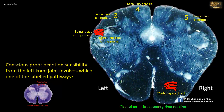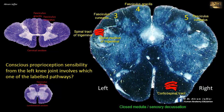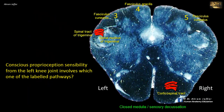Fibers are continuously added to the system from the lateral side as the spinal cord is ascended, so that at mid-thoracic level and above, fasciculus cuneatus is added from the lateral side. The fibers in fasciculus cuneatus are concerned with upper trunk and upper limb. Thus, both three and five are not involved in the sensory pathway from the lower limb. Since at this location the fibers of the dorsal column system are not crossed yet, four — the left fasciculus gracilis — is involved in the conscious proprioception sensibility from the left knee joint.